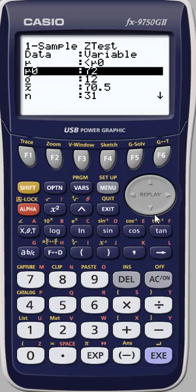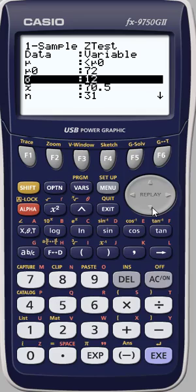We have a population mean of 72. This is the first exam average for a particular test and the population standard deviation is known to be 12.